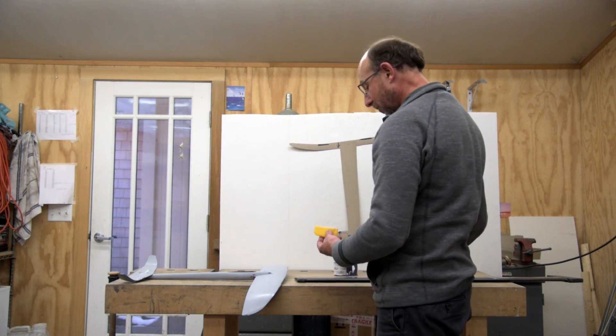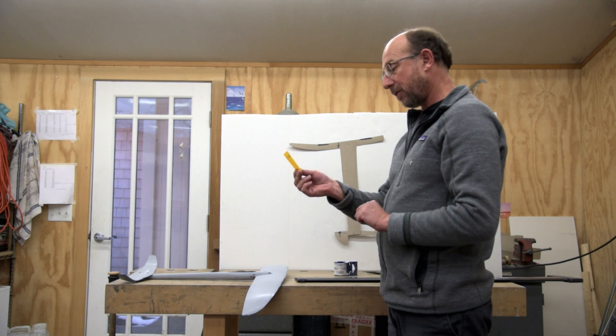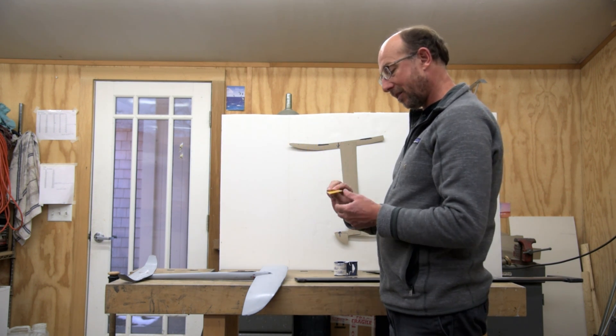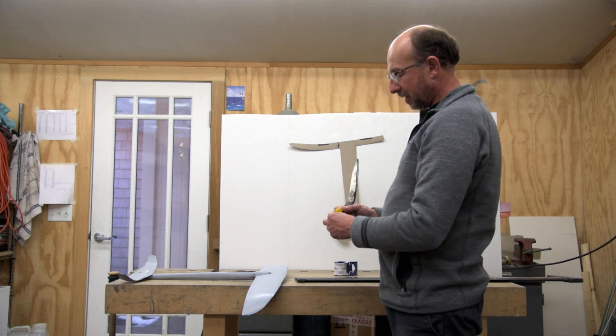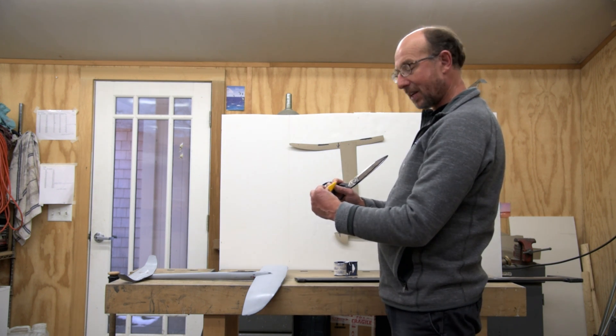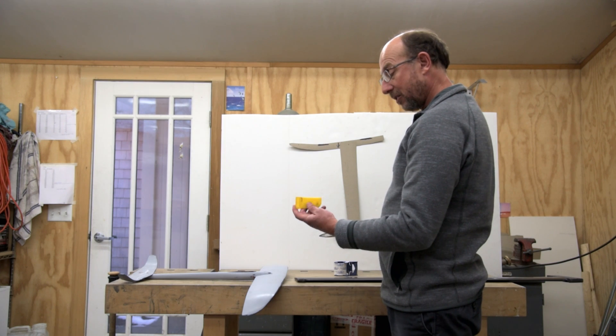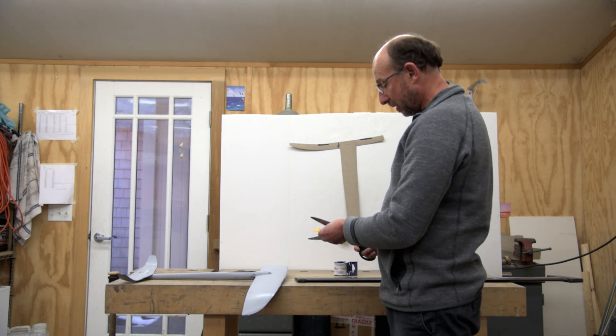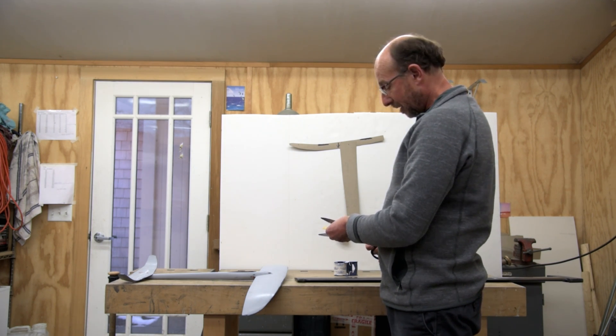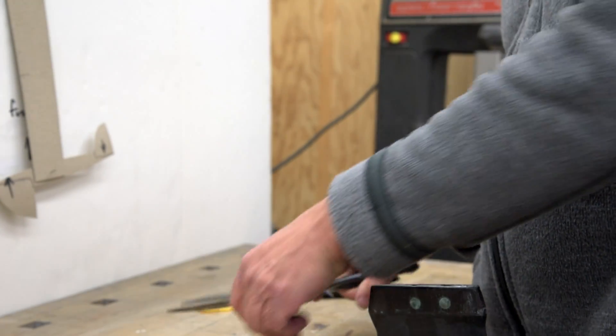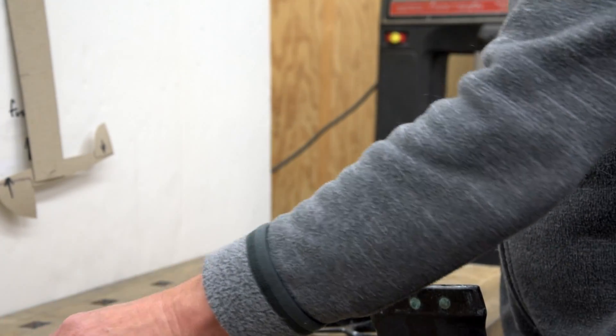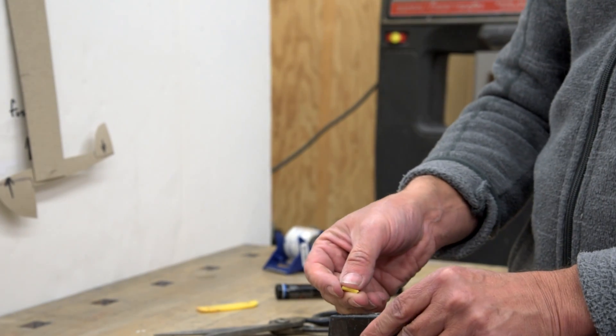So what I like to use is a piece of Bondo squeegee that you can get at any hardware store. And the nice thing about these is that they're a little thinner on one side and thicker on the other side. So you can basically get whatever thickness of shim you want out of this and you can just cut it with scissors.